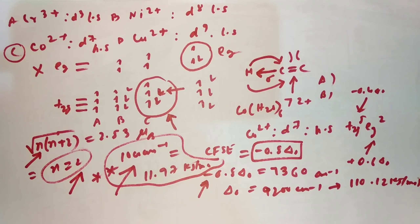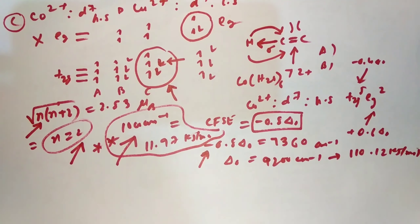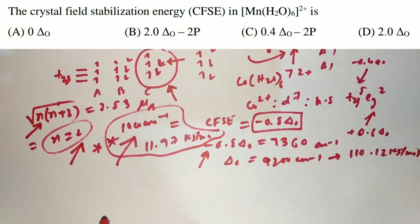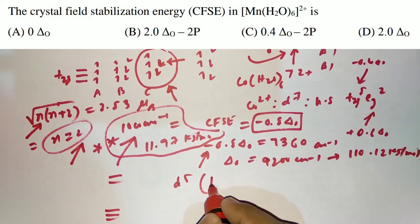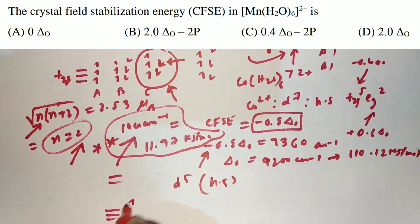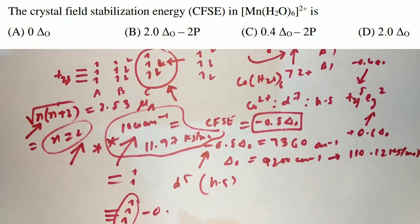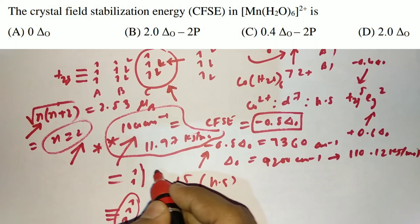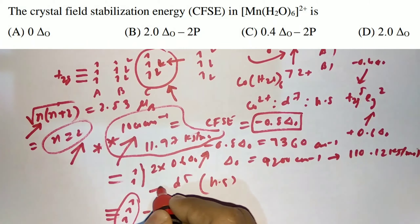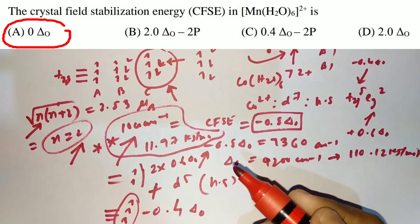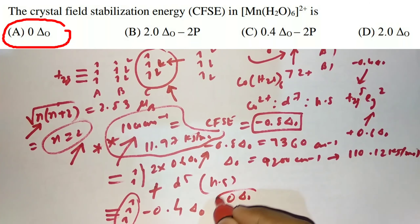Moving to JAM 2016, the first question was about Mn(H2O)6, a d⁵ high-spin system (T2g³ Eg²). Since H2O is a weak-field ligand, for the CFSE: 3×(−0.4ΔO) + 2×(+0.6ΔO) = 0. So the final CFSE is zero ΔO.